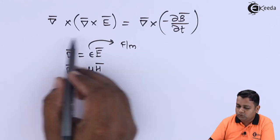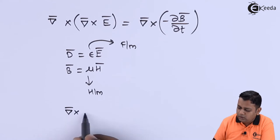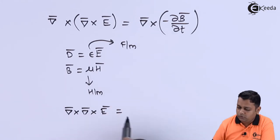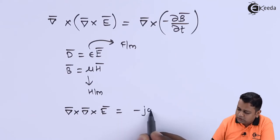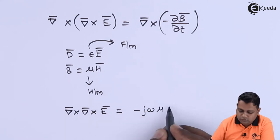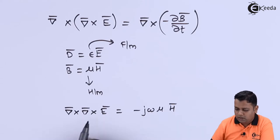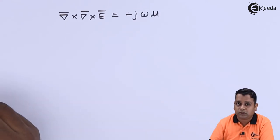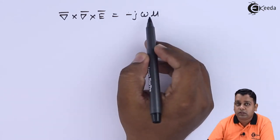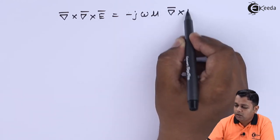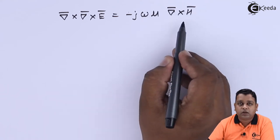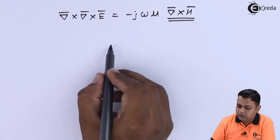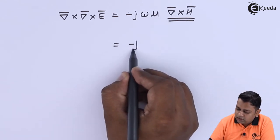With the substitution of B equals mu H, and converting to the frequency domain where del/del-t becomes j-omega, the right-hand side becomes minus j-omega times mu times H-bar. Then del-cross H-bar is replaced using the second Maxwell equation, giving minus j-omega times mu times the quantity (sigma plus j-omega epsilon) times E-bar on the right-hand side.